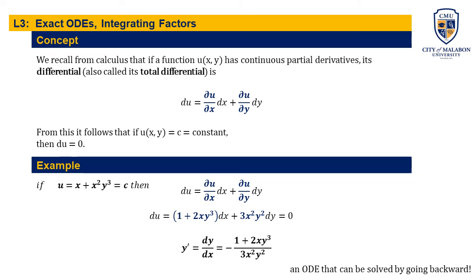We recall from calculus that if a function u of variables x and y has continuous partial derivatives, its total differential is expressed by this equation: du is equal to the partial derivative of u with respect to x times dx plus the partial derivative of u with respect to y times dy. If this function u equals a constant, then du equals 0.